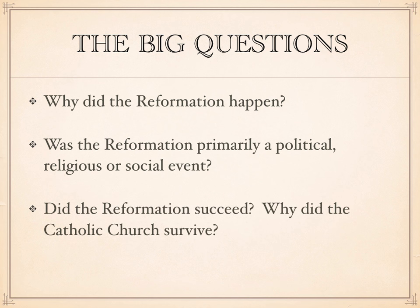Then you've got to move on to why the Reformation succeeds. If the Church had had critics going back centuries, why is it in the 16th century that we see the creation of new Protestant churches and the Catholic Church finally break apart? The flip side is why does the Catholic Church survive at all? If these criticisms were so well-founded, why does the Church retain substantial political, social, and religious power? That gets us into the questions of the Counter-Reformation or Catholic Reformation at the end of the chapter.